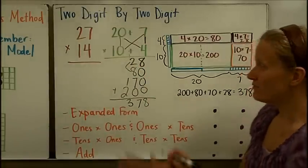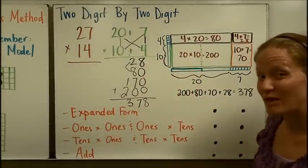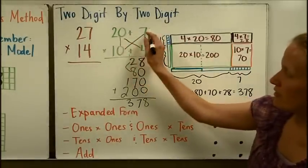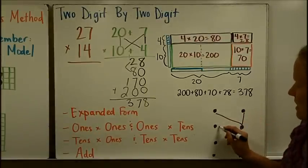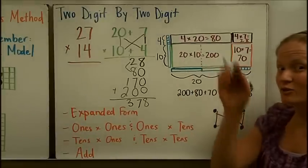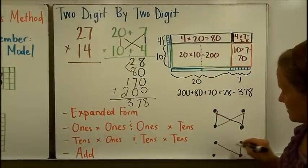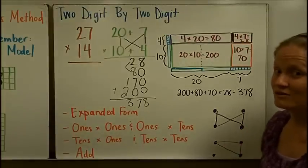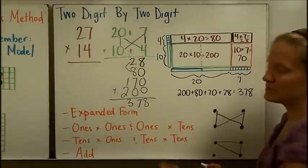One little reminder: if you get confused about which to multiply by which, you might want to think about a bow tie. When I draw the lines — ones times ones, ones times tens, tens times ones, tens times tens — it makes a bow tie shape. If you accidentally draw any lines going horizontally, that won't make a bow tie, so you'll know you've made a mistake and need to go back and follow these steps correctly.